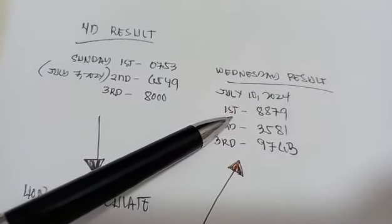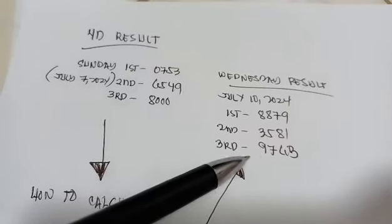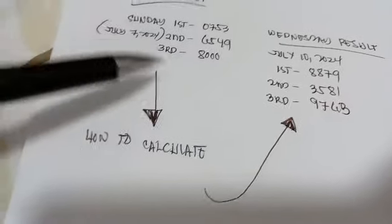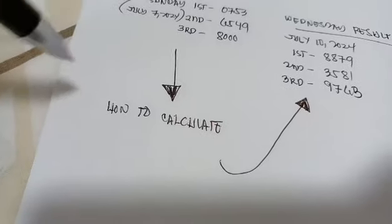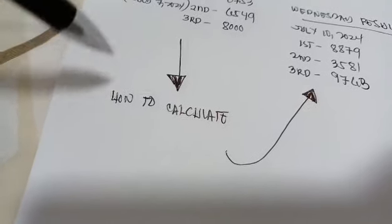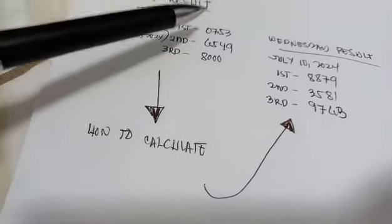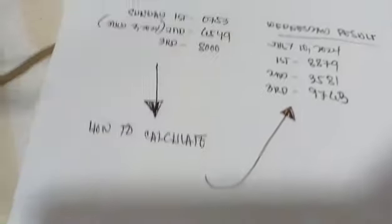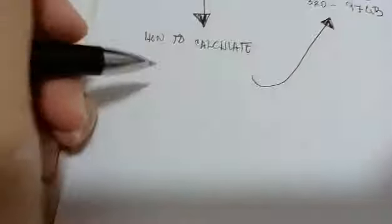The result last Wednesday is 8879, 3581, 9763. Now I want to give you another strategy on how to calculate the winning combination. First we need to calculate the 0753.